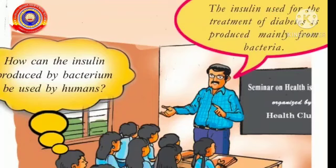At the beginning of this chapter, have you noticed Saju's doubt when he heard the doctors' talk in the seminar conducted by the health club? How can a bacteria produce insulin that can be used by humans? Have a look.